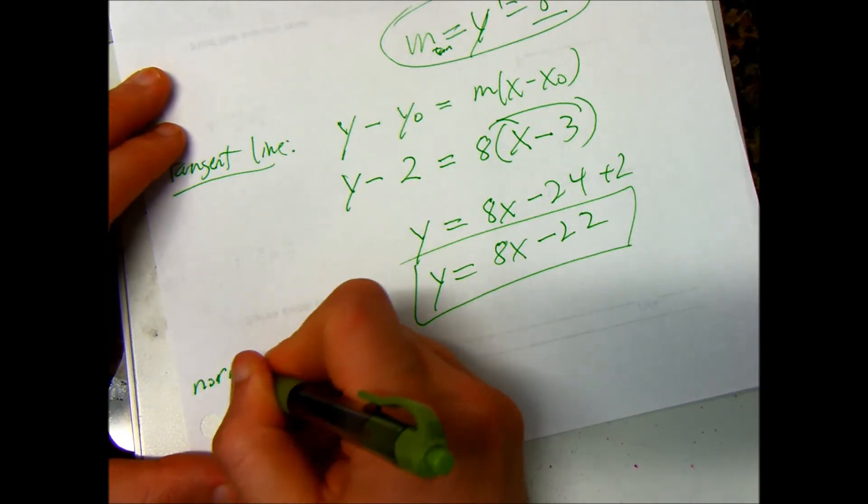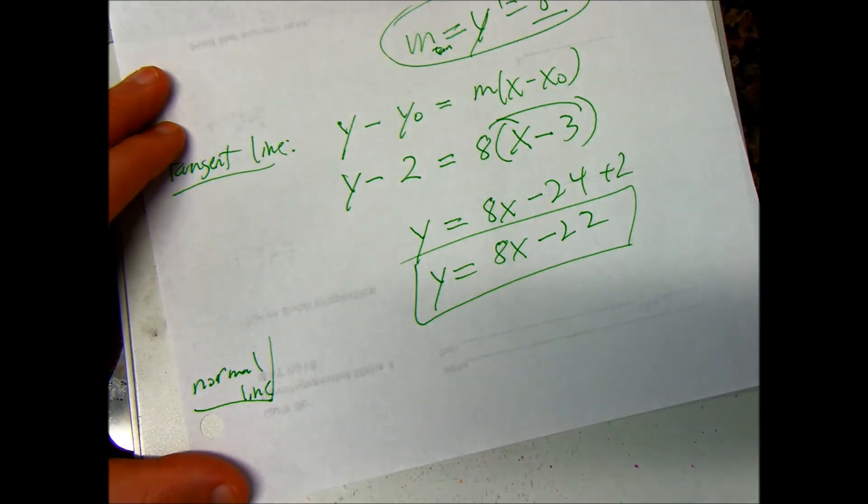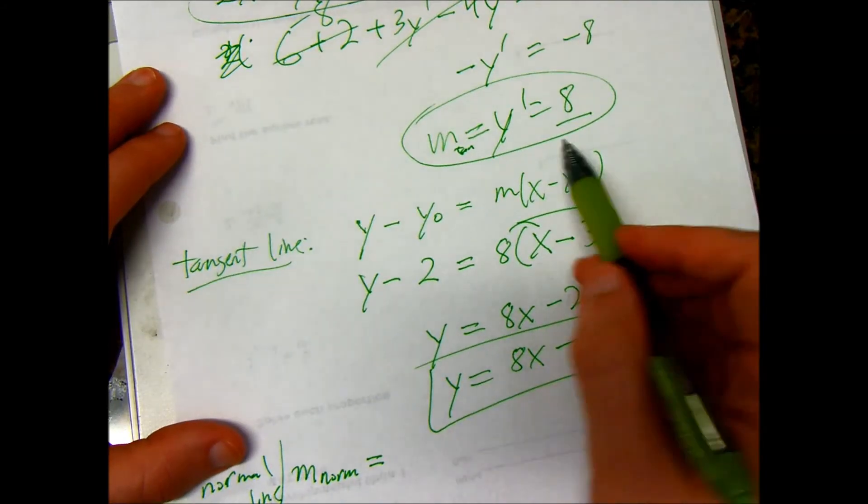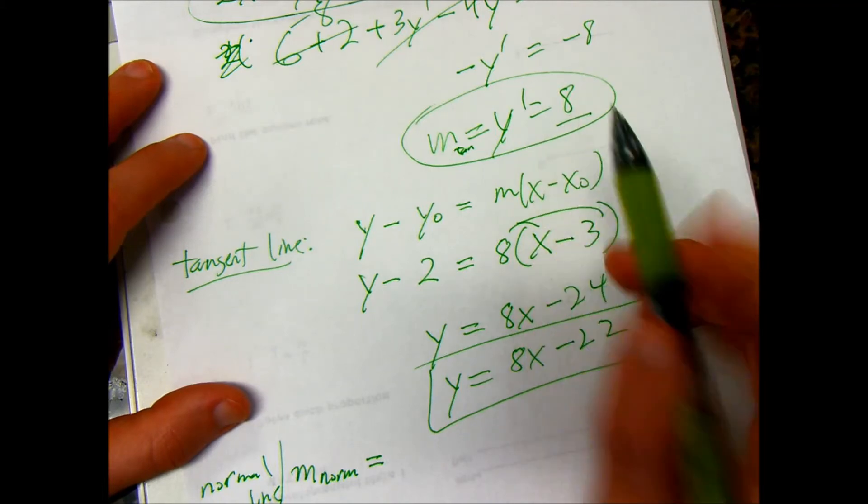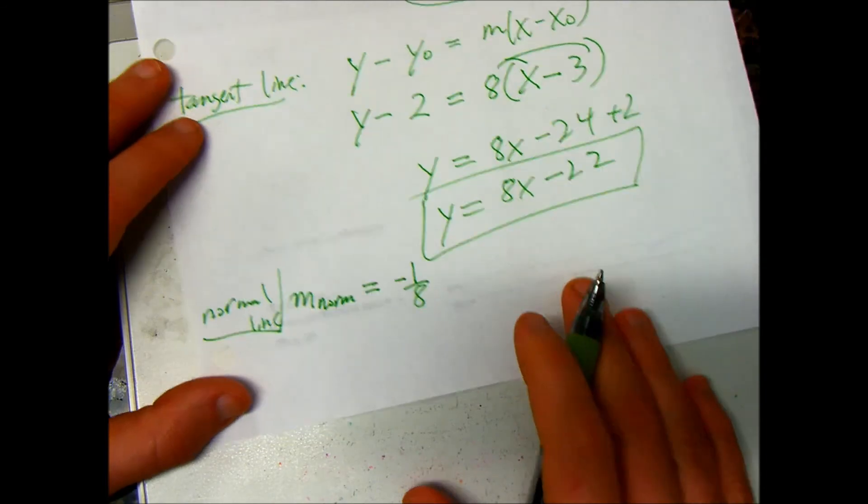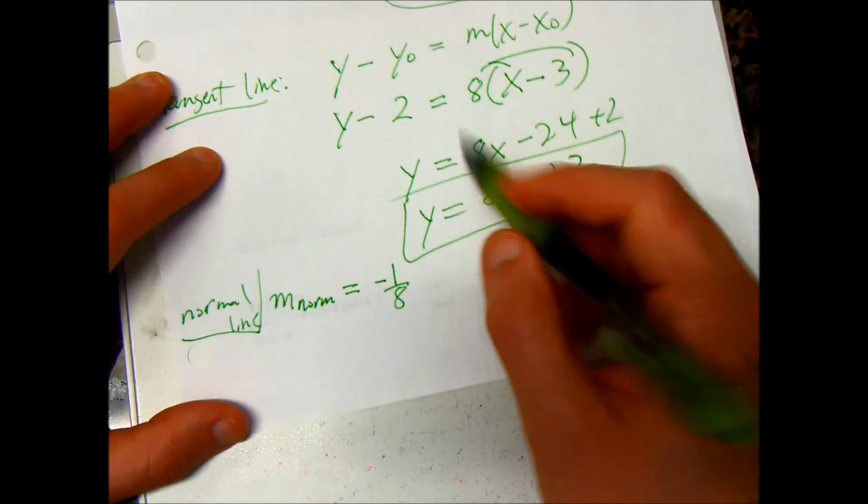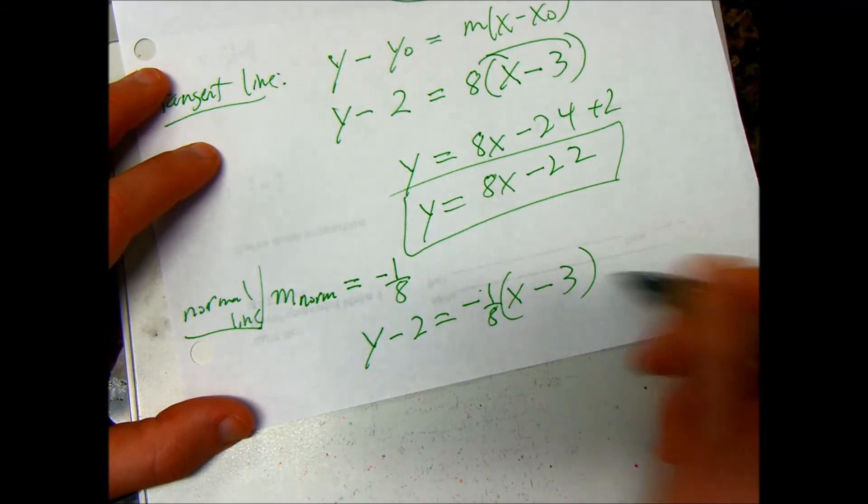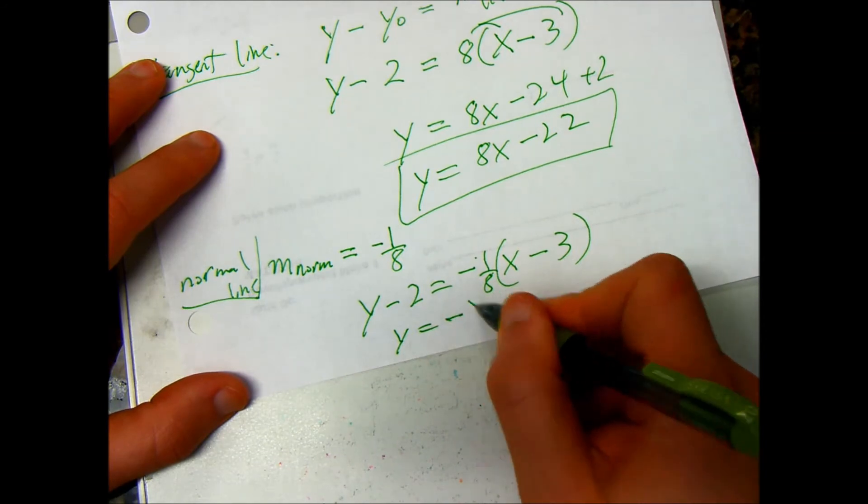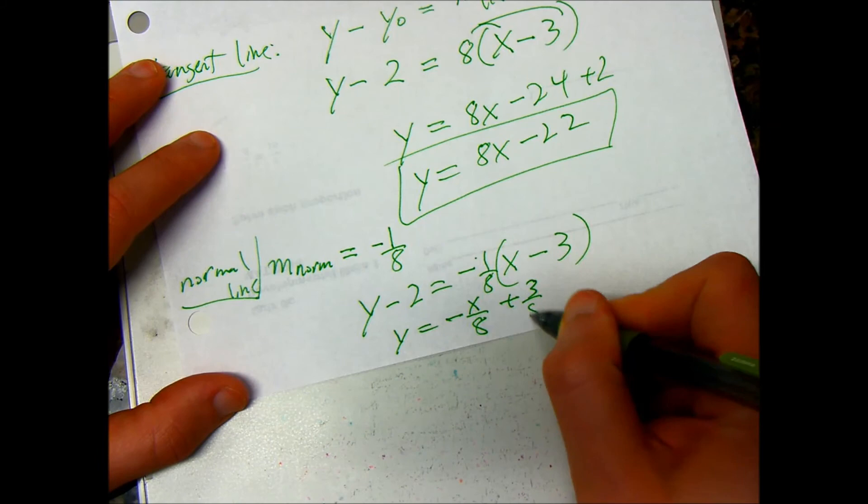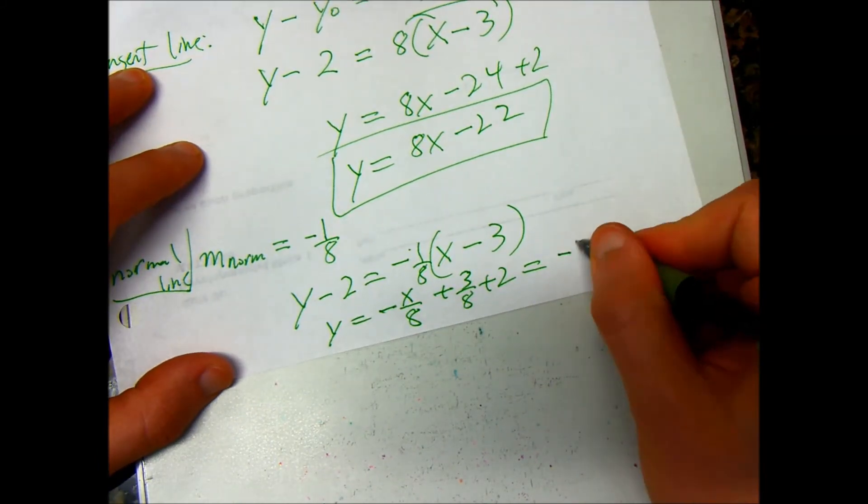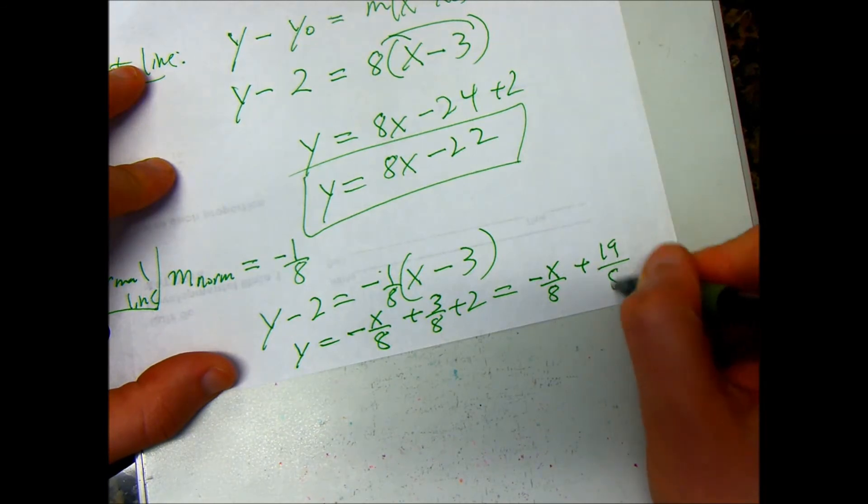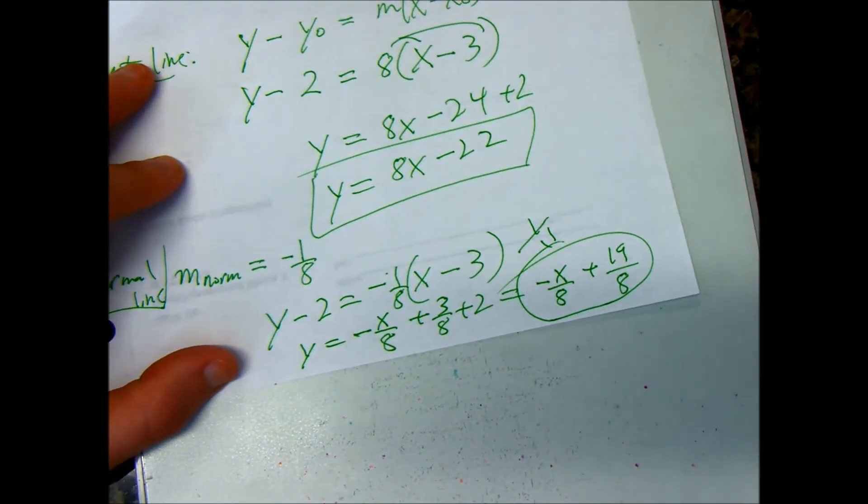Alright, normal line is very similar. You only have to do one more step. And that is, your slope of your normal line is perpendicular to the slope of your tangent line. Or, the line is perpendicular, so the slope is the opposite reciprocal, right? So I take this, and I do negative 1 over 8. Like I said in class. So, again, using this formula, now I just have y minus 2 is equal to negative 1 over 8 x minus 3. And I solve for y. I get y is equal to negative x over 8 plus 3 over 8 plus 2, which simplifies to negative x over 8 plus 16, 19? 19 over 8, I believe. So, y equals this. That's my normal line.